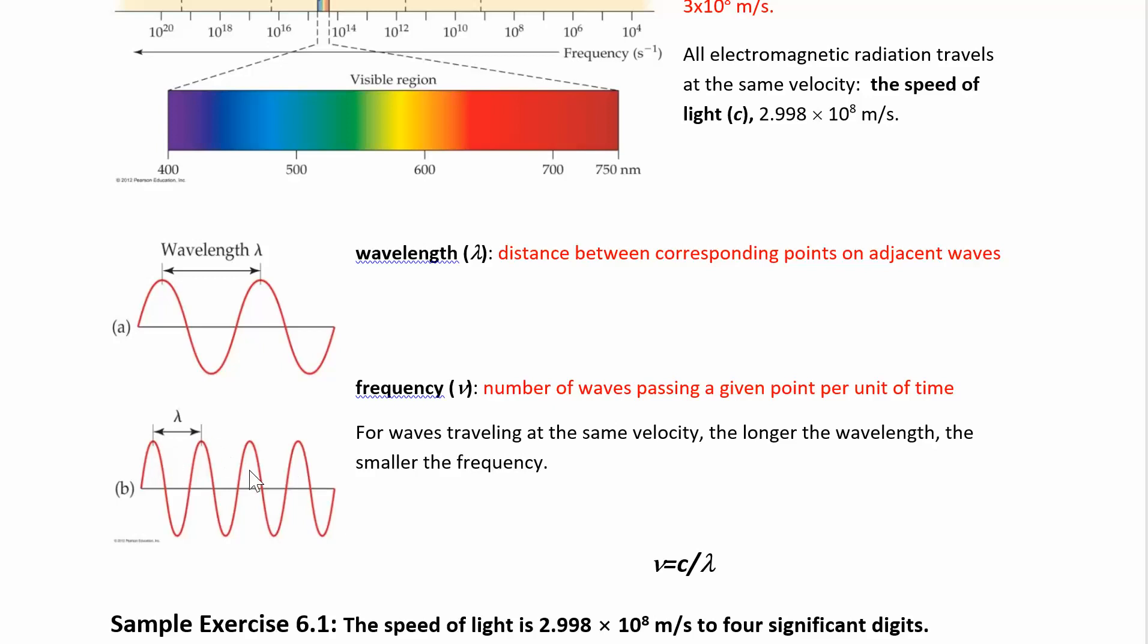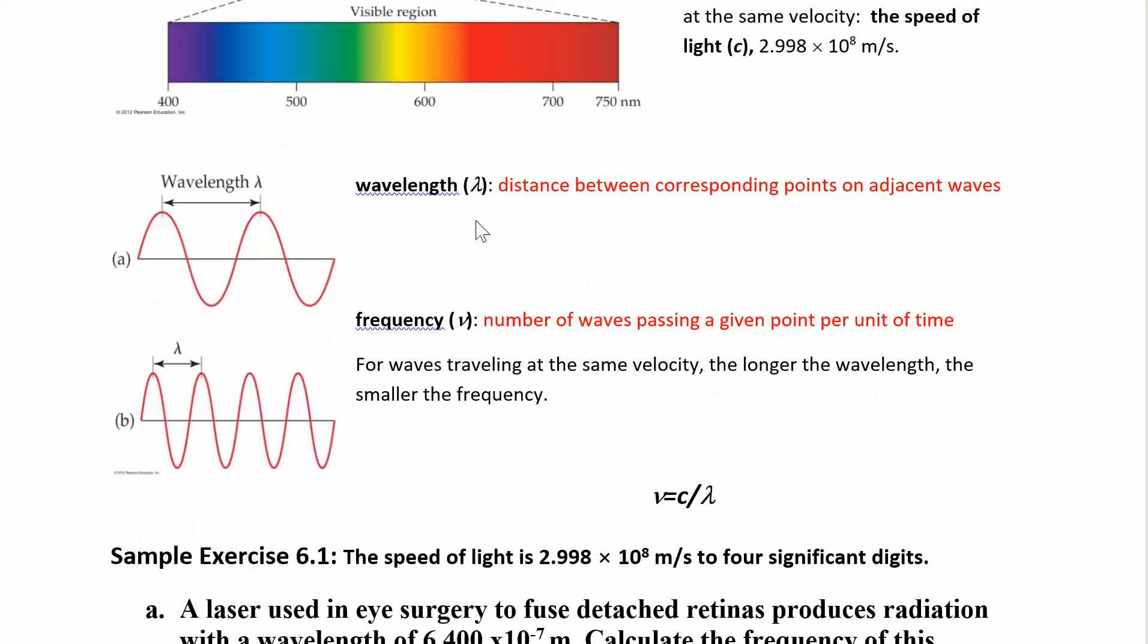So the higher the frequency, they're inversely proportional. So they are related to each other. Frequency is C over lambda, new equals C over lambda. So if you're thinking, oh, that looks like Greek, this is totally Greek. So the wavelength is lambda, and frequency is new. And then C is the speed of light over here, which is a constant.